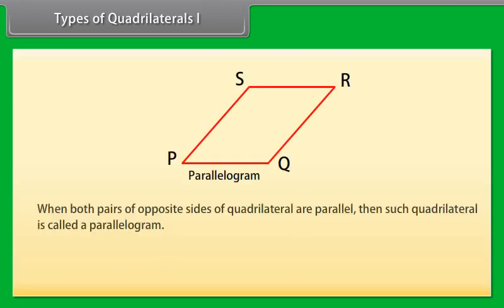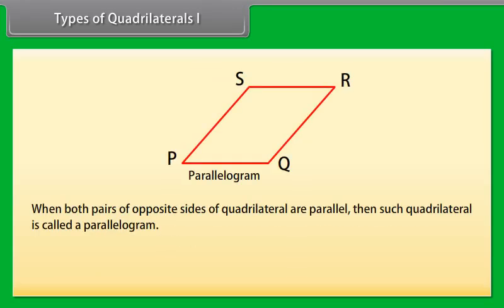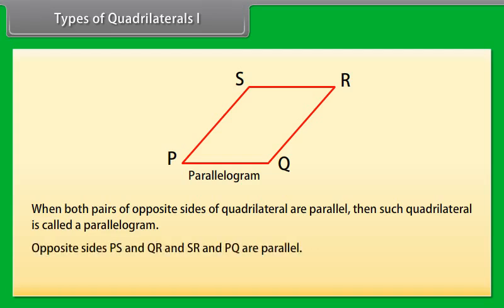Parallelogram: When both pairs of opposite sides of a quadrilateral are parallel, such a quadrilateral is called a parallelogram. Here, opposite sides PS and QR, and SR and PQ, are parallel, so PQRS is a parallelogram.